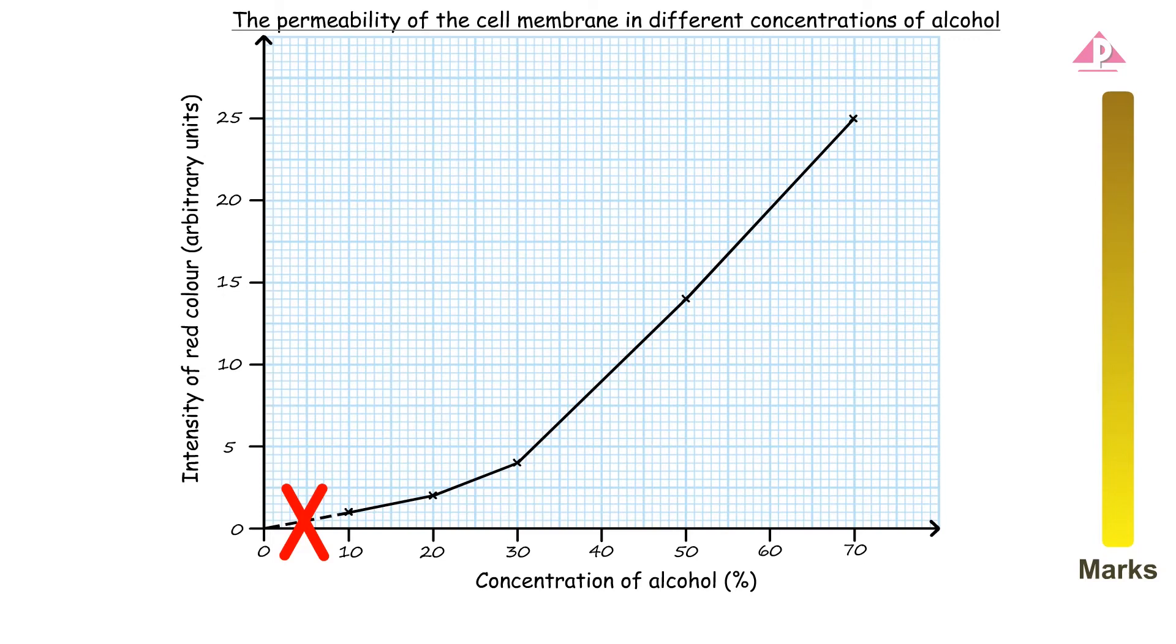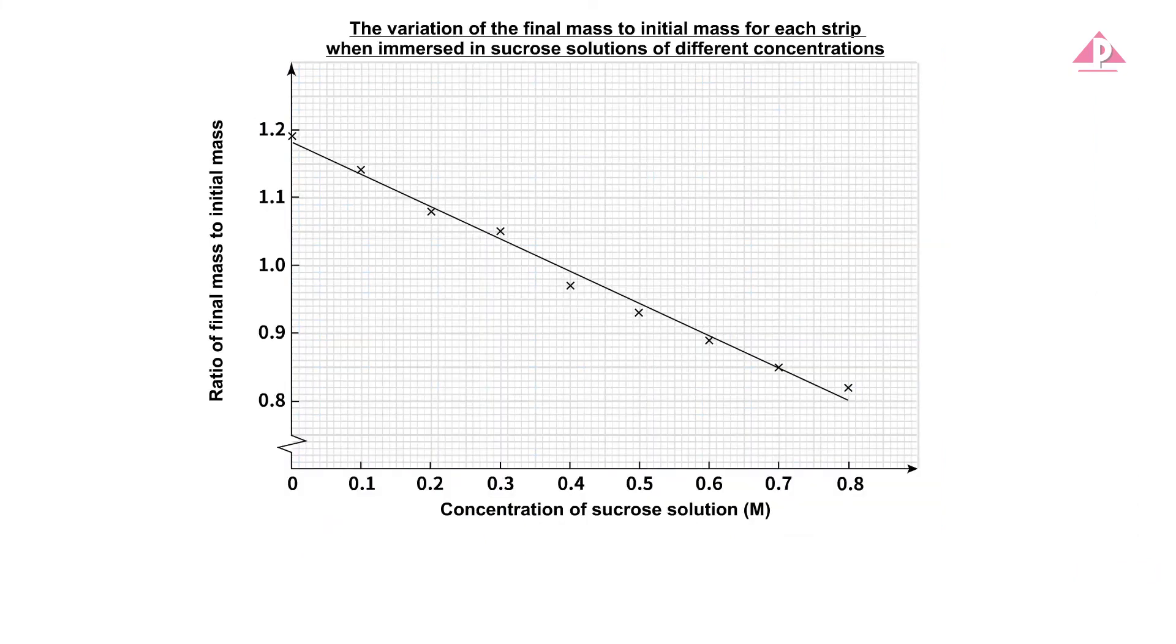In some cases, such as estimating the concentration of a solution that is isotonic to a tissue, we do draw a line of best fit instead of joining data points with straight lines. The reason is that the data show a linear trend as expected. A line of best fit represents the entire set of data and may be used to estimate unknowns. If similar questions appear in the exam, drawing a line of best fit may be more appropriate.